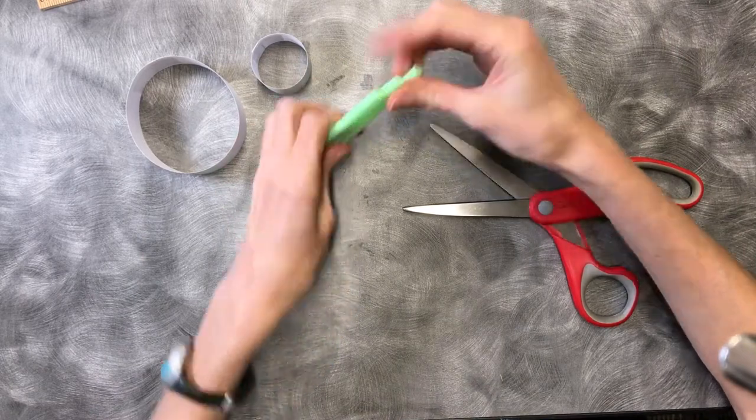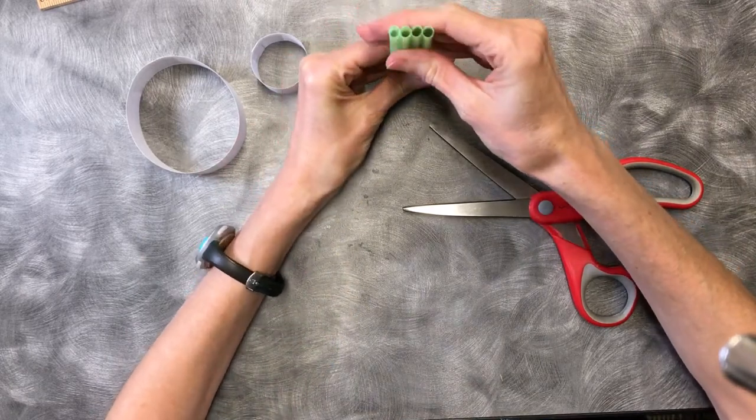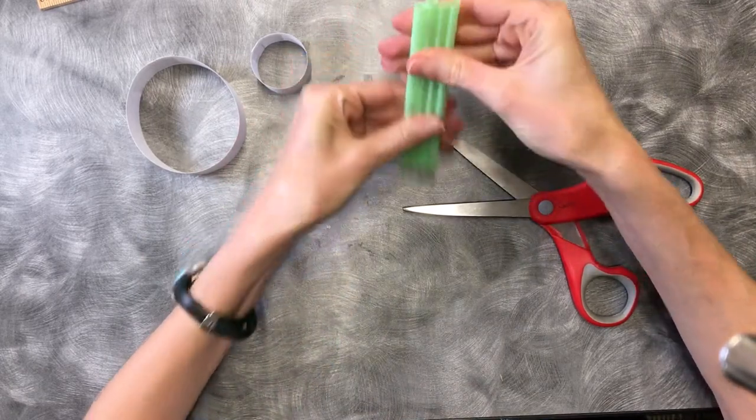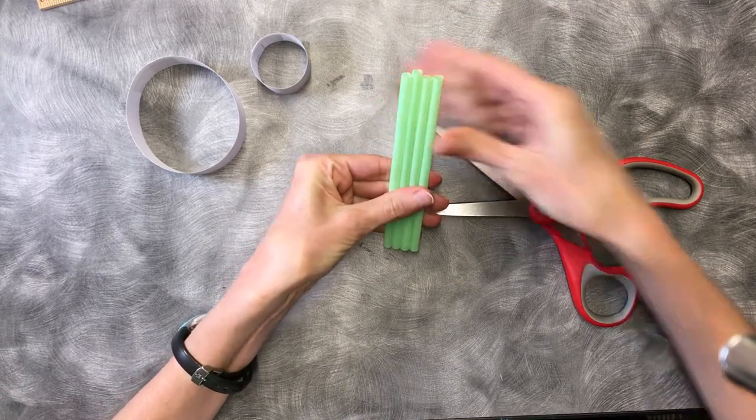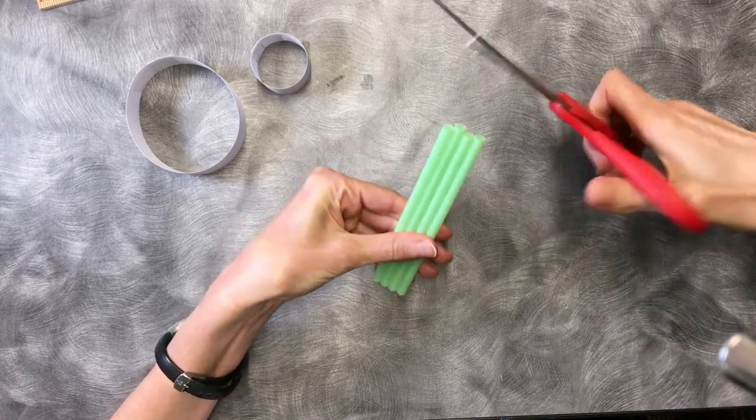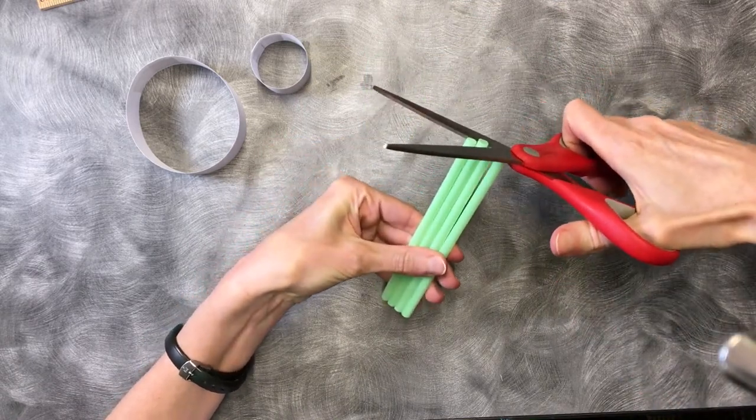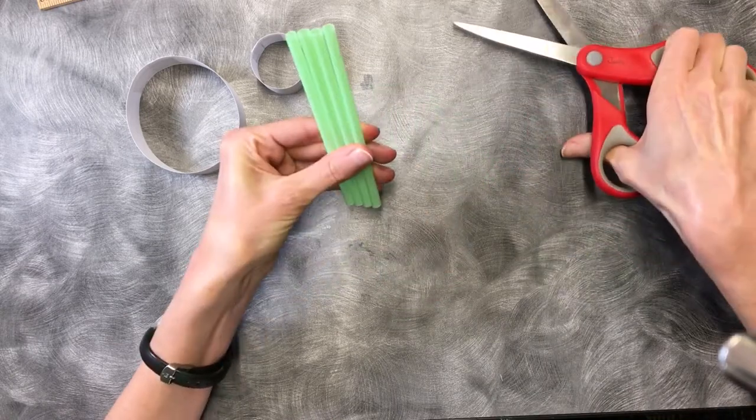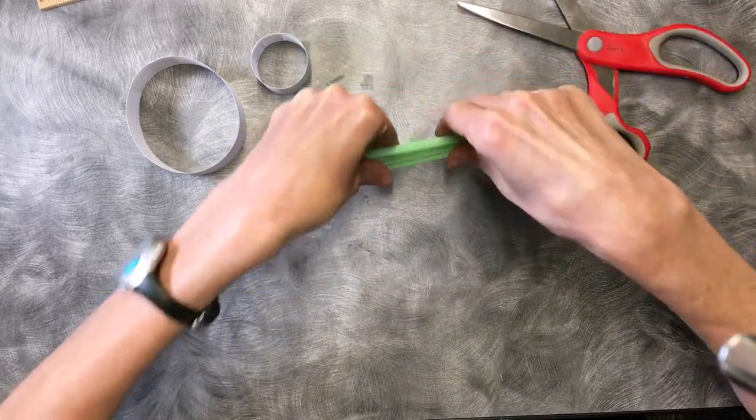Alright, so I have my four straws here. They're a little bit off but not by much. I could probably make it like this no problem but I'm going to trim that one right there because it's a little bigger.